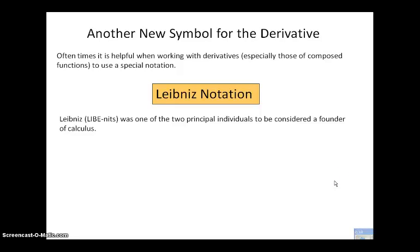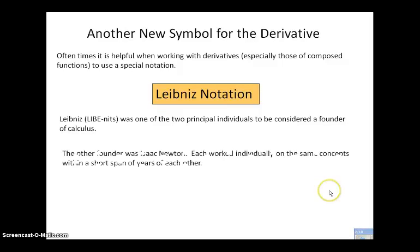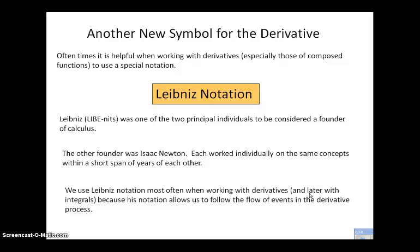Leibniz is the gentleman that was considered to be one of the founders of calculus, along with Isaac Newton. Isaac Newton is the other founder, and interestingly there's a book called The Calculus Wars for those of us math nerds that want to dig deeper into this. These two gentlemen worked independently — they were contemporaries of each other. Within a short span of years, both of them had claimed to discover calculus on their own, and both claimed it was their discovery, and there was a big fight about it. There's a book that covers it called The Calculus Wars.